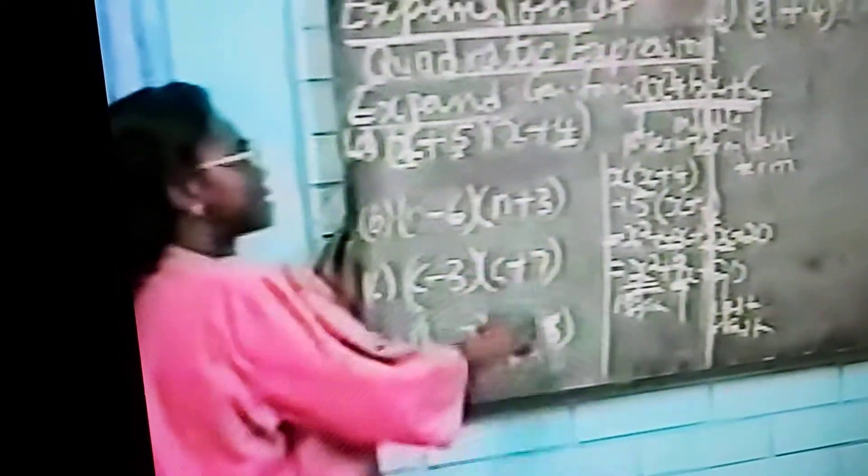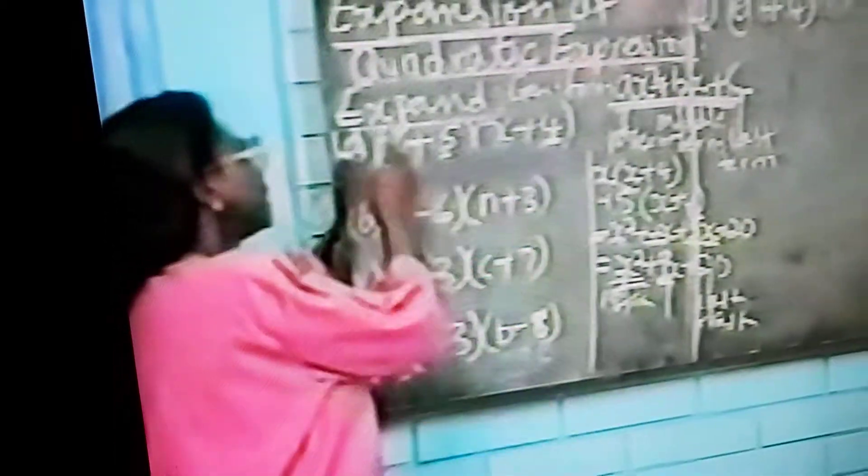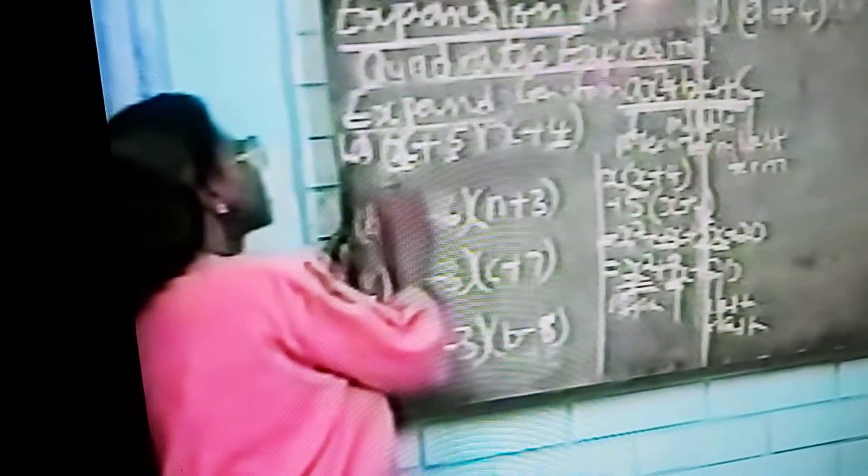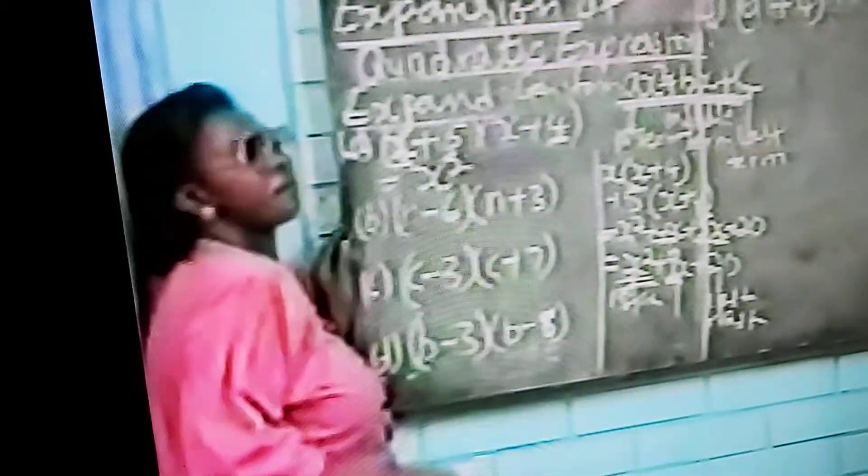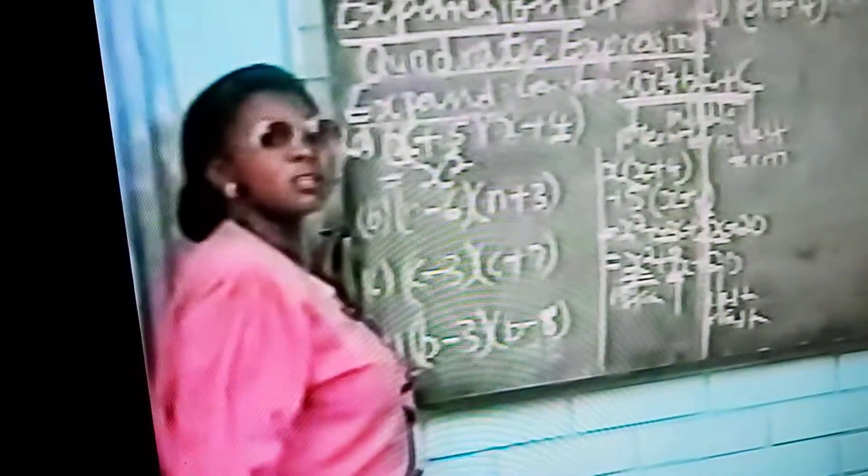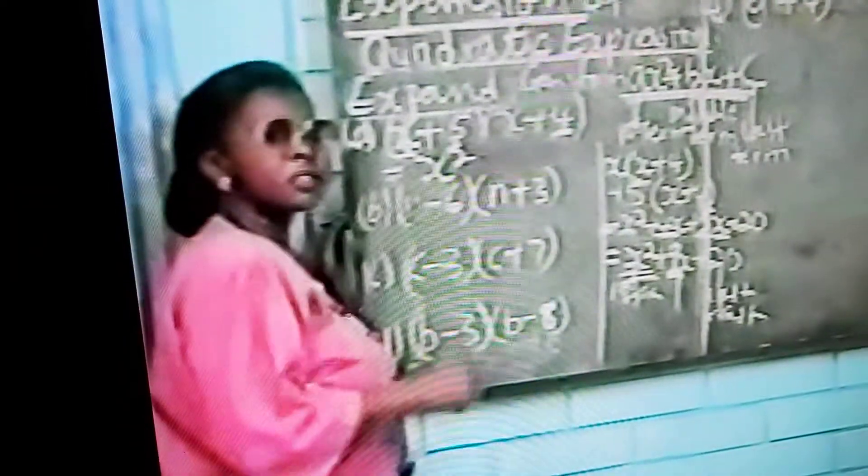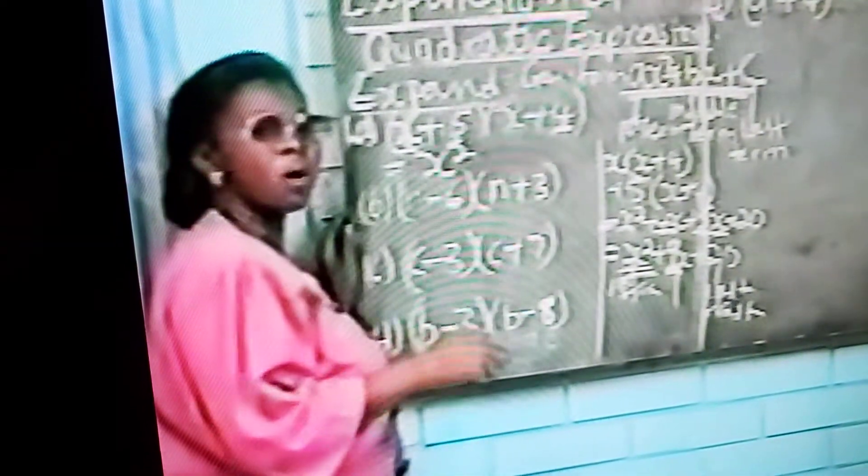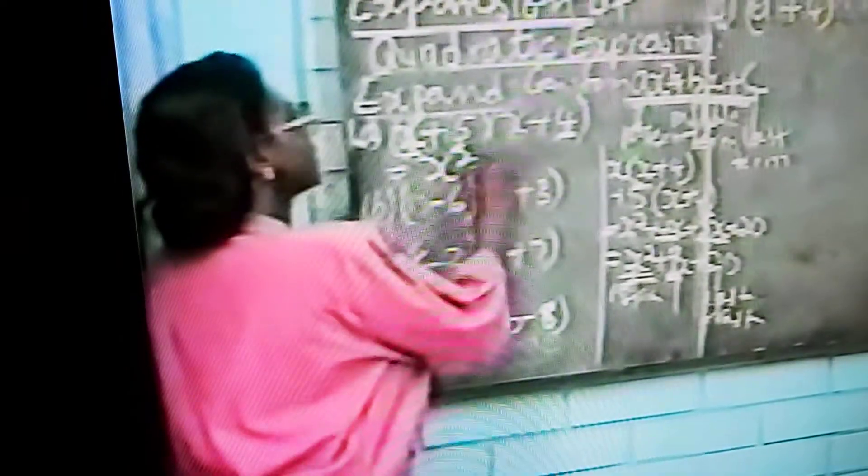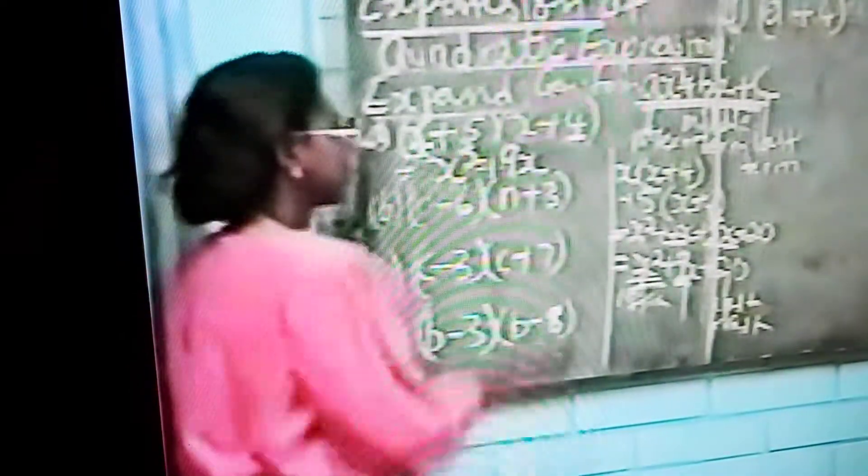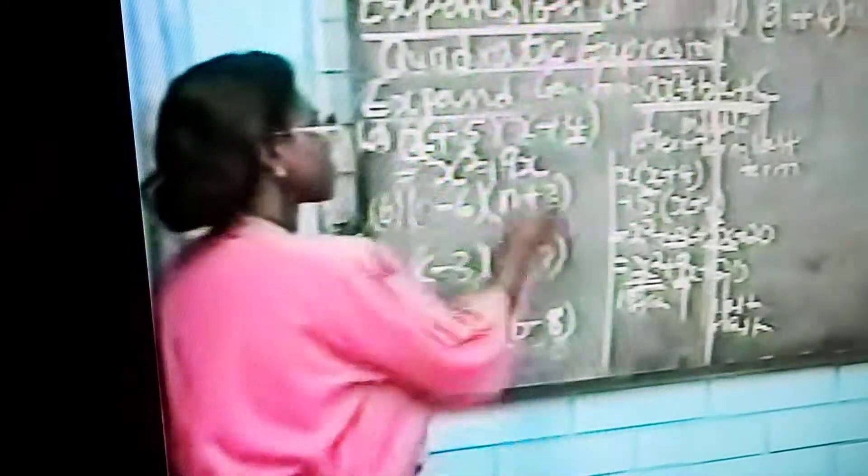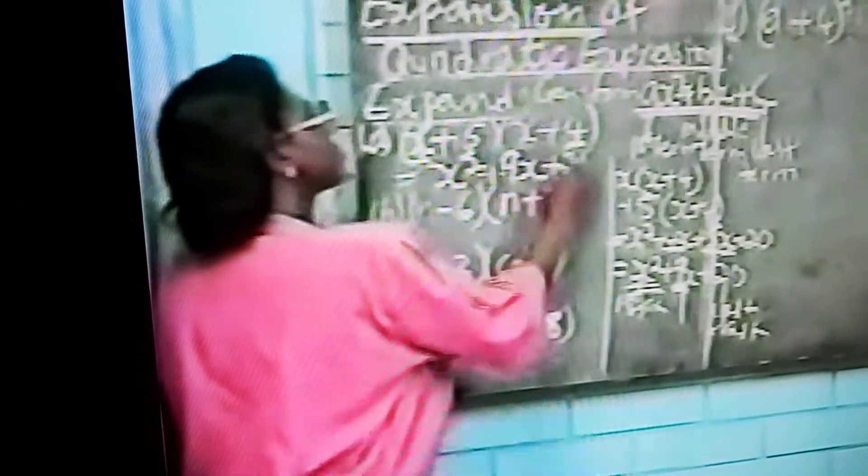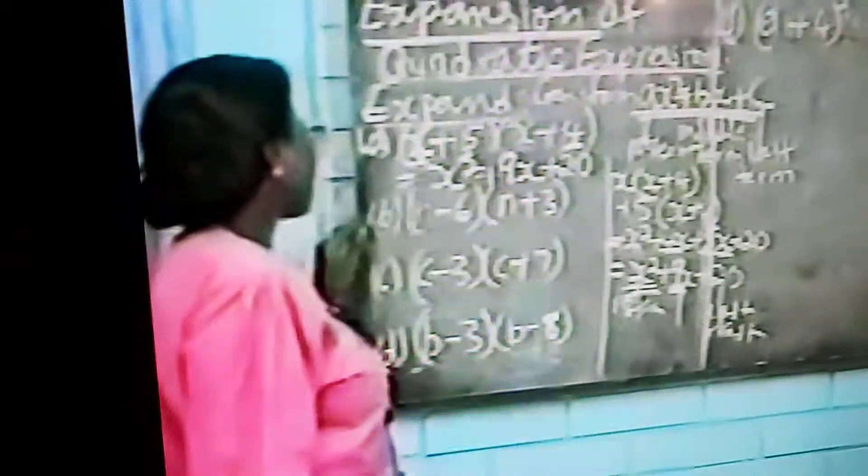We already have the answer but we still go through the number 3. x times x will give us x squared. 5 plus 4 will give us 9. And that gives the coefficient of x raised to power 1. So we have plus 9x. Then 5 times 4, 20. Plus by plus is plus. So we still have plus 20.